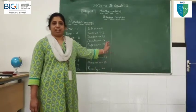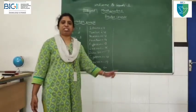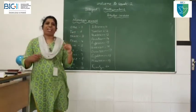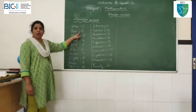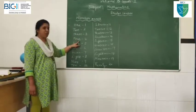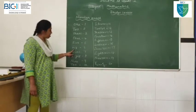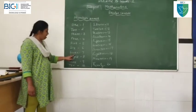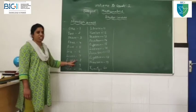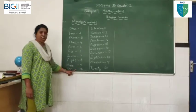Now, I will start with the number names. Children, you have already studied whatever you have studied in first grade. Now, let me start with the number names. O-N-E 1, T-W-O 2, T-H-R-E-E 3, F-O-U-R 4, F-I-V-E 5, S-I-X 6, S-E-V-E-N 7, E-I-G-H-T 8, N-I-N-E 9, T-E-N 10.